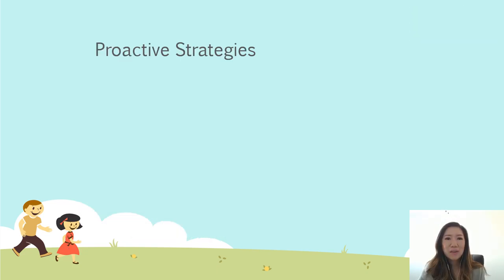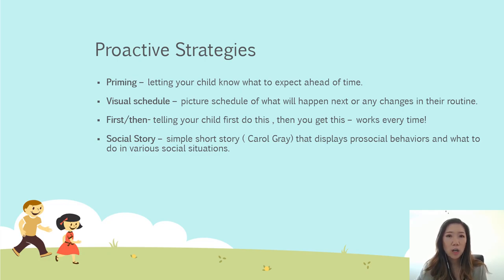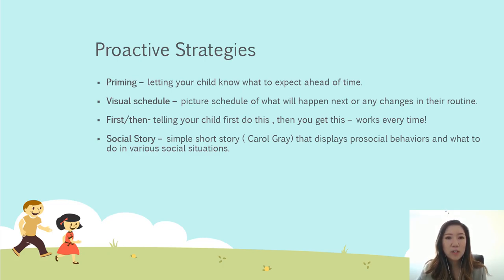Next, we're going to talk about proactive or preventative strategies — strategies you use prior to the behavior happening to eliminate and prevent it. First is priming, like front-loading. Priming basically means you're letting your child know what to expect ahead of time — like in the morning: 'After school, you're going to Target with mom, then we pick up your brother, then we go home.' When you pick up your child, remind them again. This is especially important when there are changes in the schedule — let them know well ahead of time.